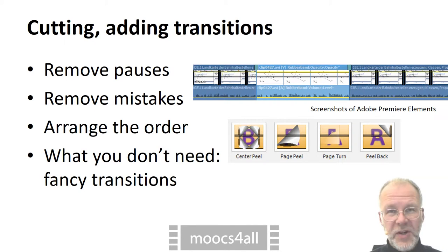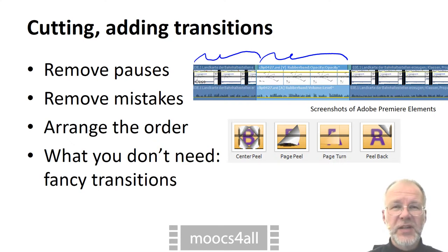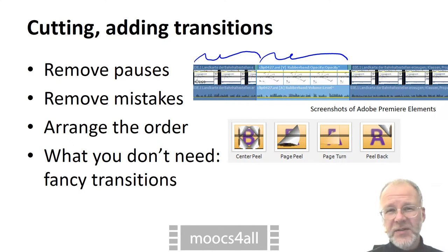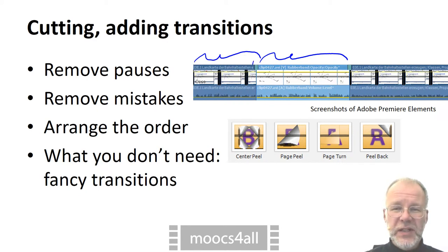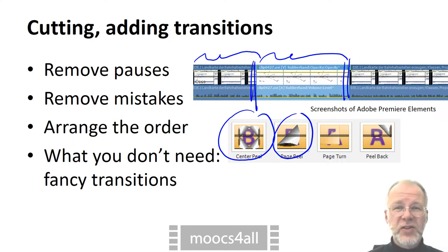The main job in video editing software is to carve out the part of the video clips that you want to show. You cut away pauses and mistakes and arrange the order of clips. Commercial video editing software comes with dozens of animated transitions to insert between clips. At first these seem to be impressive, but soon they look cheesy. Occasionally a quick and simple dissolve — that's all you need.